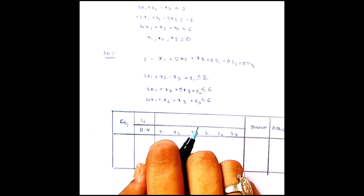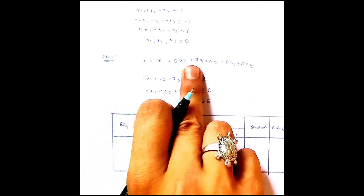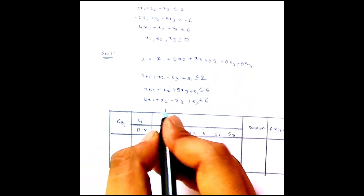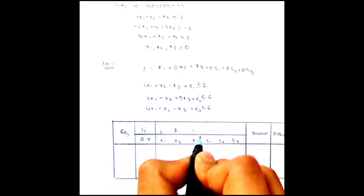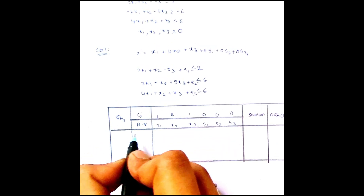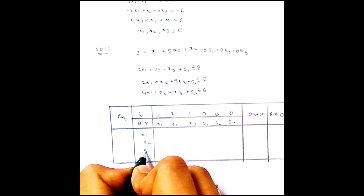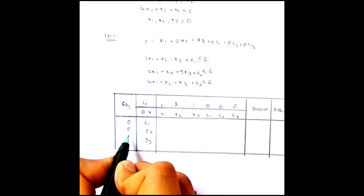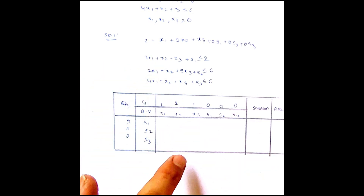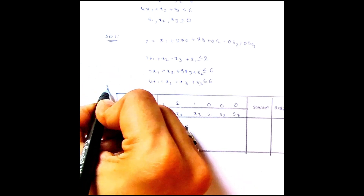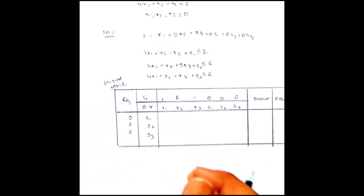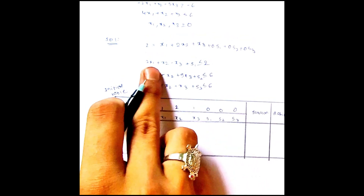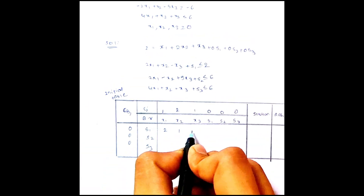The cj values are 1, 2, 1, 0, 0, 0. For the first equation, the coefficients are: 2, 1, minus 1, 1, 0, 0 and the solution is 2. Similarly, the second row: 2, minus 1, 5, 0, 1, 0 with solution 6. And the third row: 4, 1, 1, 0, 0, 1 with solution 6. This is the initial table.